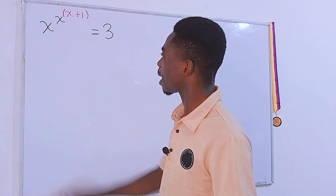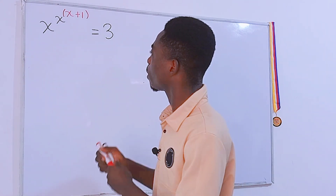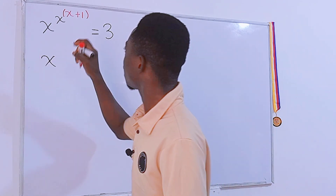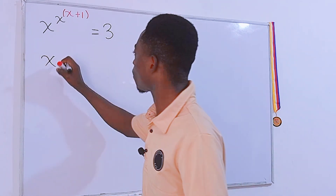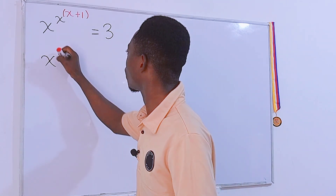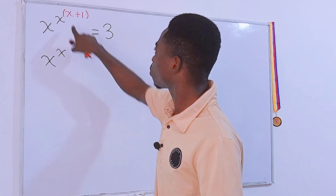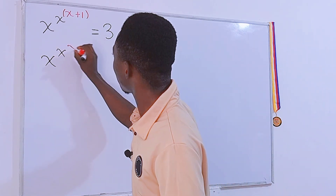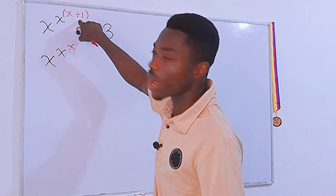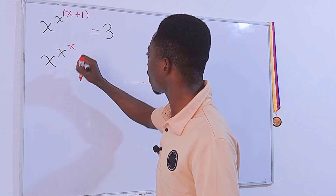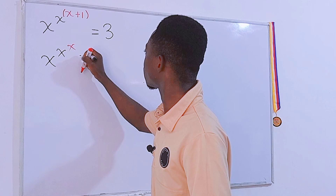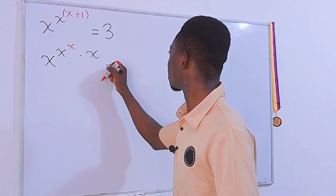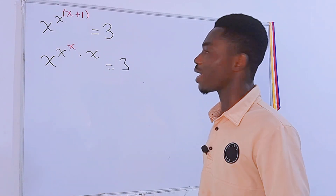We have to start right from the top here and come down. So it means I have to maintain this x right here. We maintain that x, then to the power this x, and also to the power this x right here. So we have x in red, then plus 1, which is the same as the power here times x.